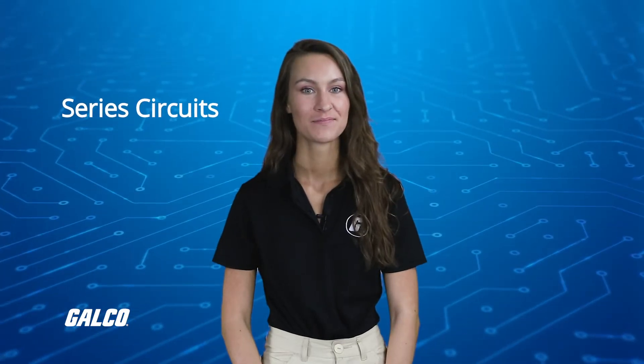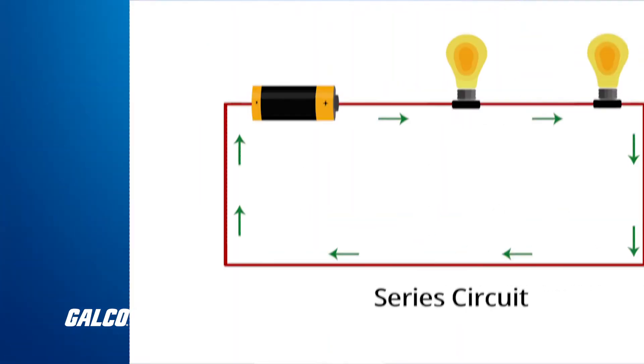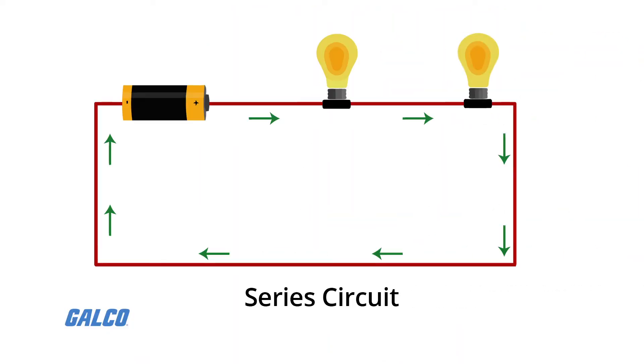In a series circuit, every device must function for the circuit to be complete. For example, if one bulb burns out in a series circuit, the entire circuit is broken.